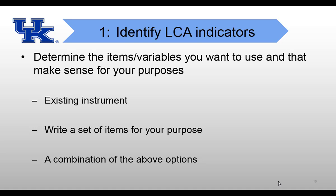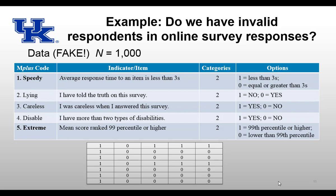After reviewing the literature, I found many indicators for invalid responding, and decided to use five: speedy, lying, careless, disabled, and extreme. I will introduce them one by one.